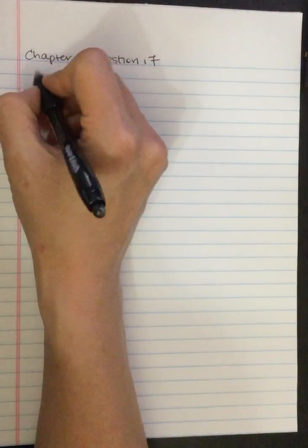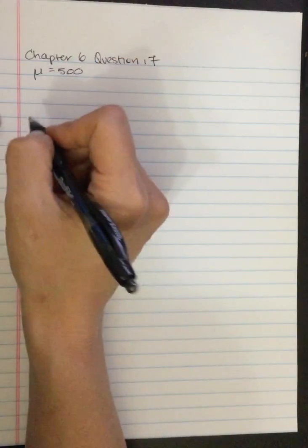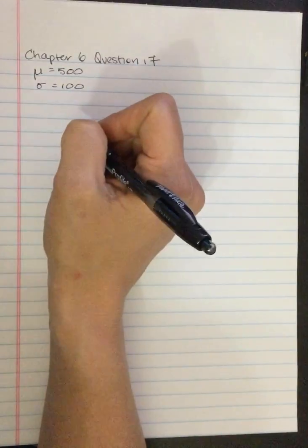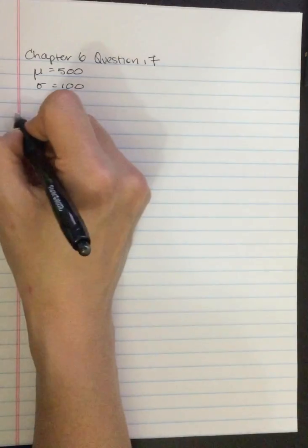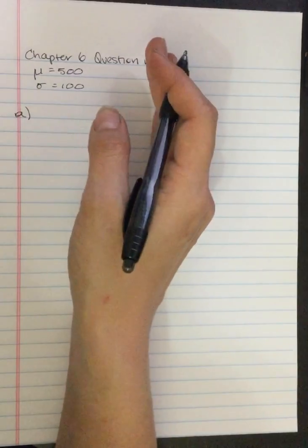Question 17. The distribution of scores on the SAT is approximately normal with a mean of 500 and a standard deviation of 100. For the population of students who have taken the SAT, what proportion have SAT scores less than 400?